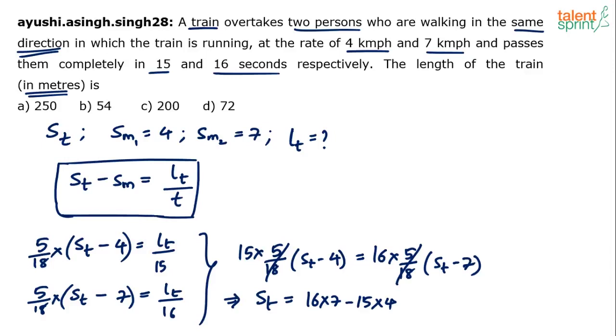So 16 St minus 15 St is St which equals 16 times 7 minus 15 times 4. 16 into 7, what is that? 70 plus 42, 112 minus 15 times 4 is 60. So this is 52 metres per second. Or just substitute 52 numerically. Substitute 52 here in this equation.